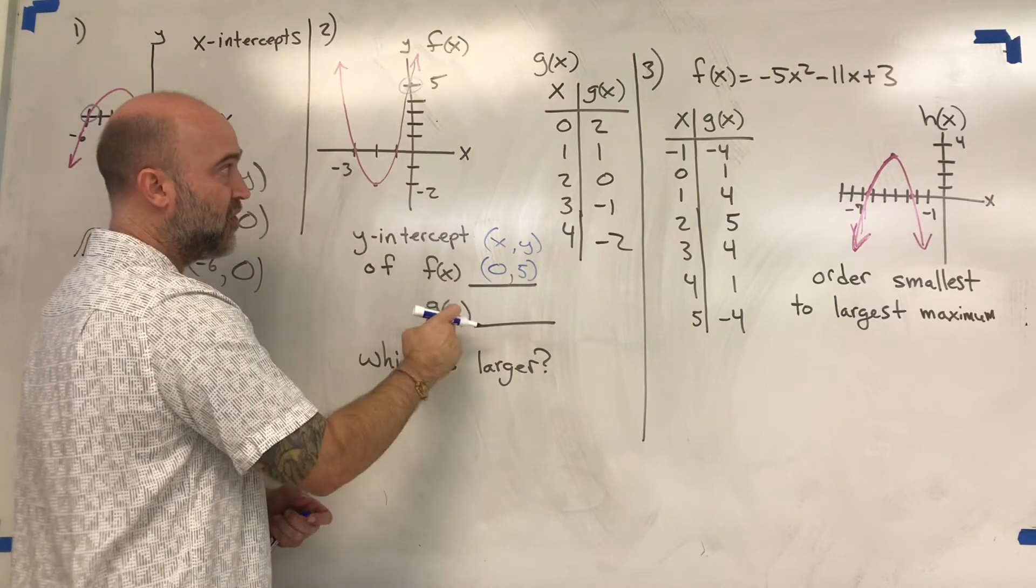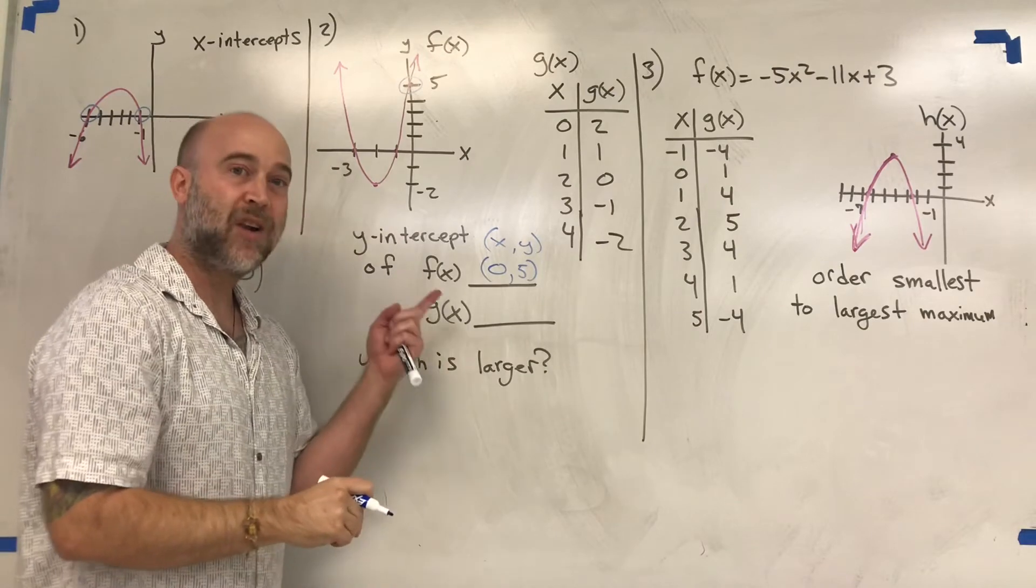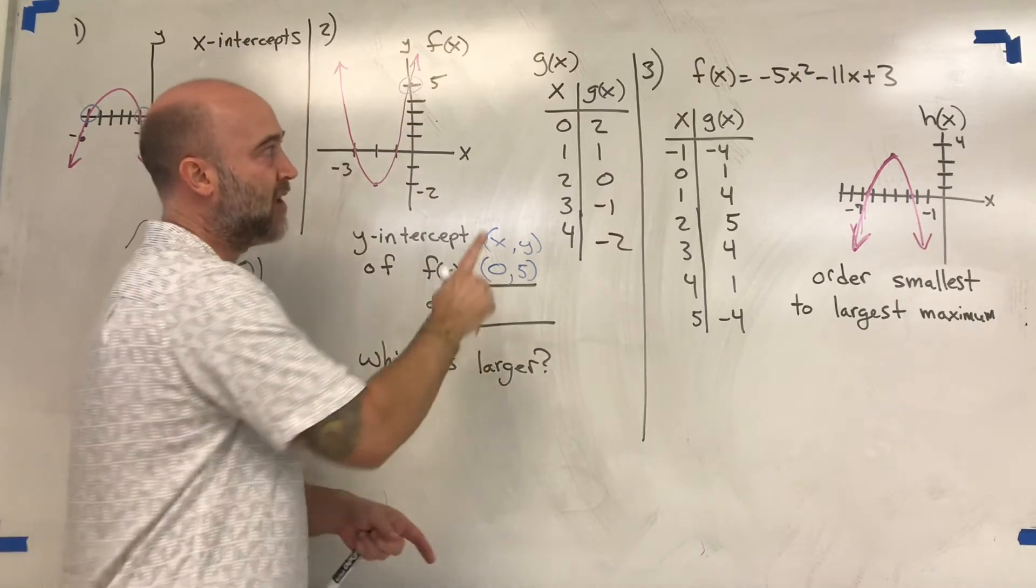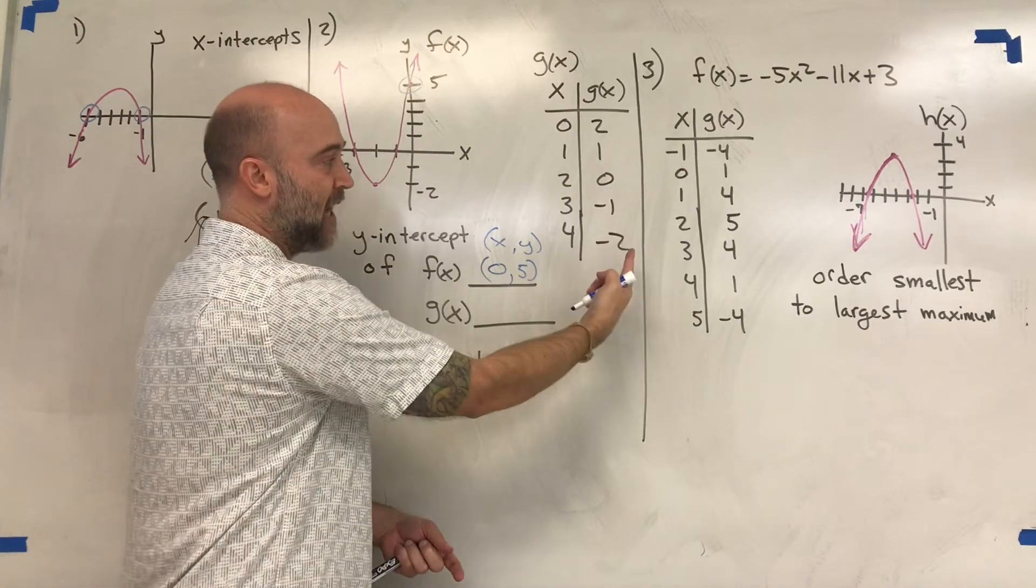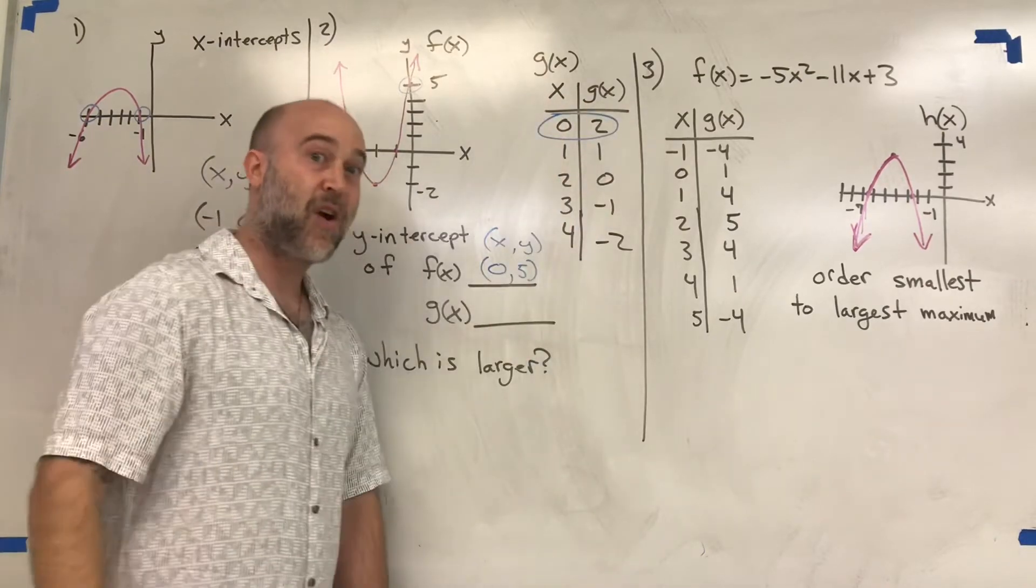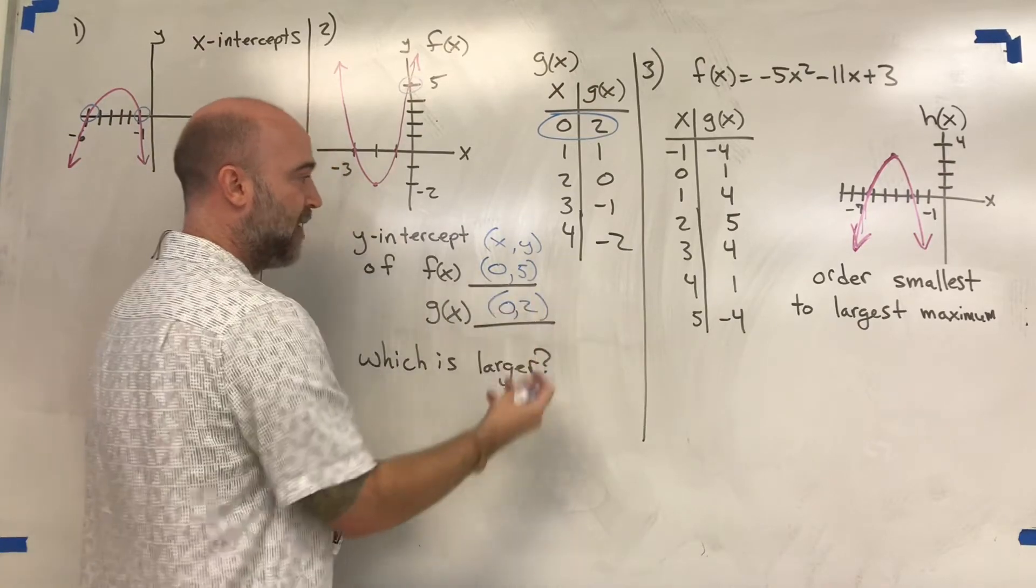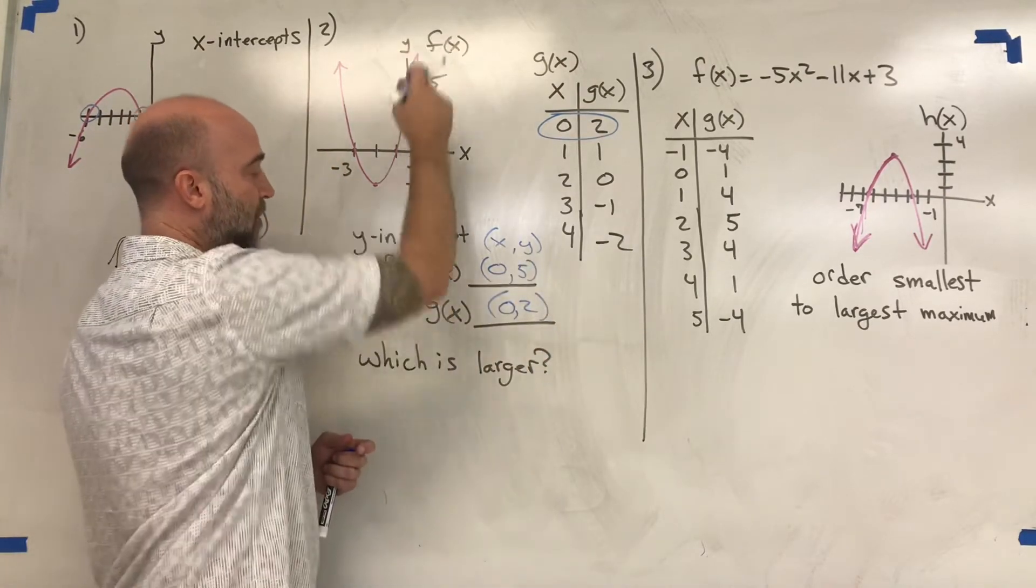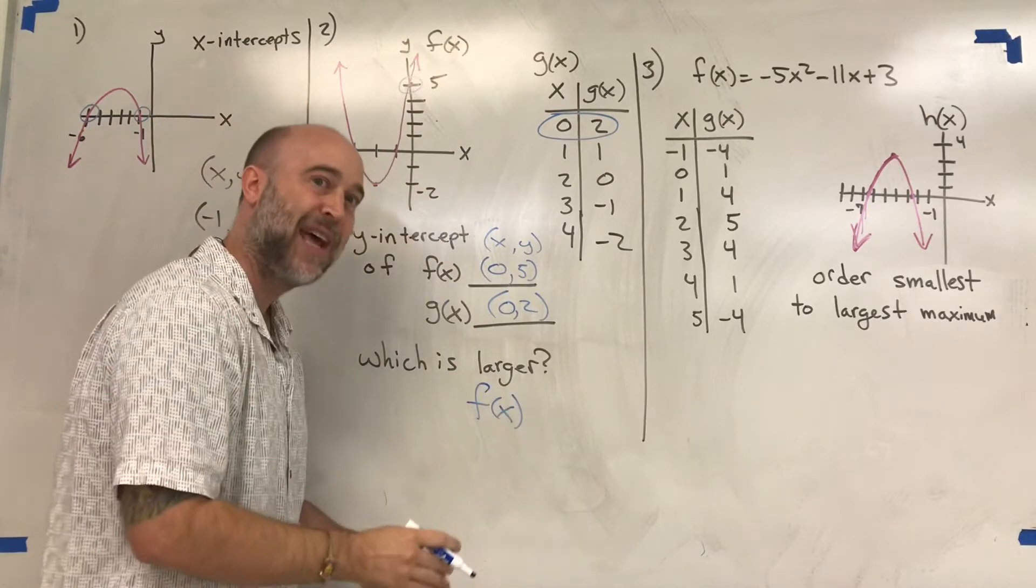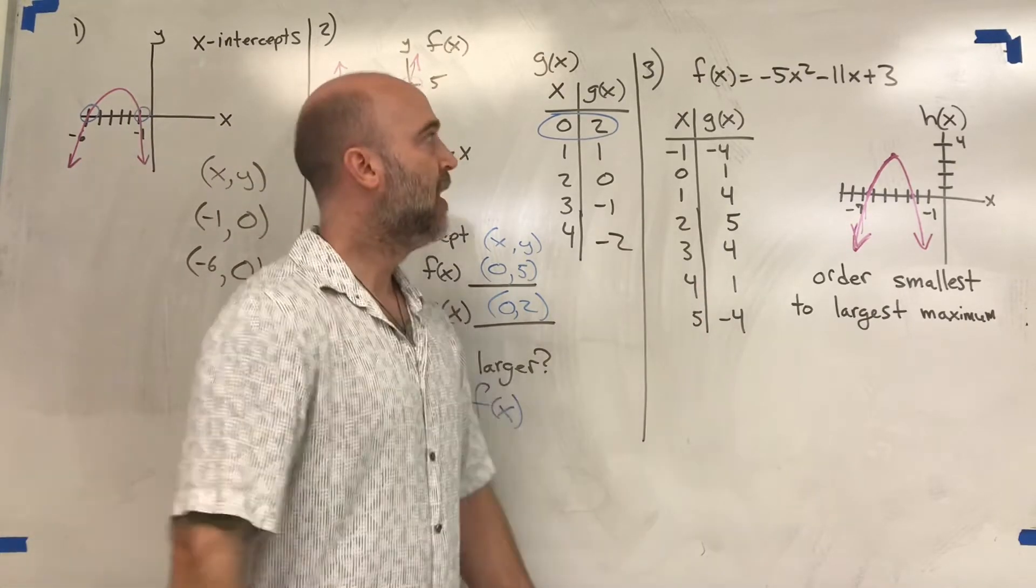For g(x), here's our graph right here. For a y-intercept we look where x equals zero. There we are, zero for x—that means this right here is our y-intercept at (0, 2). Which one is larger? This is higher up on the y-axis, so the answer is f(x) has a larger y-intercept.